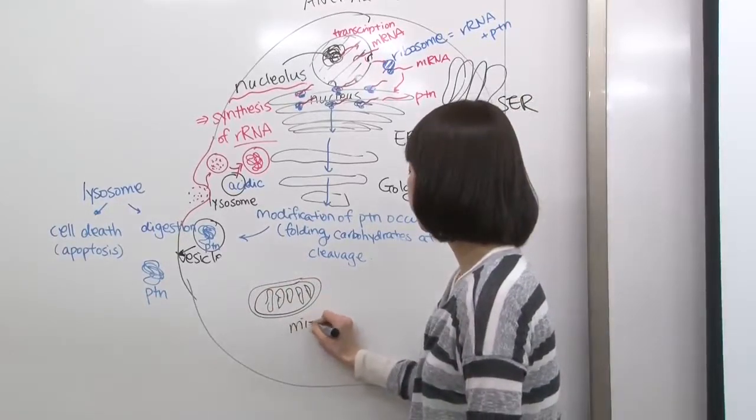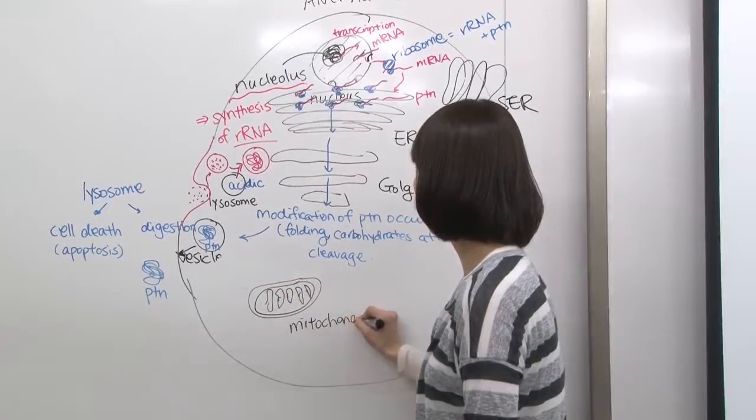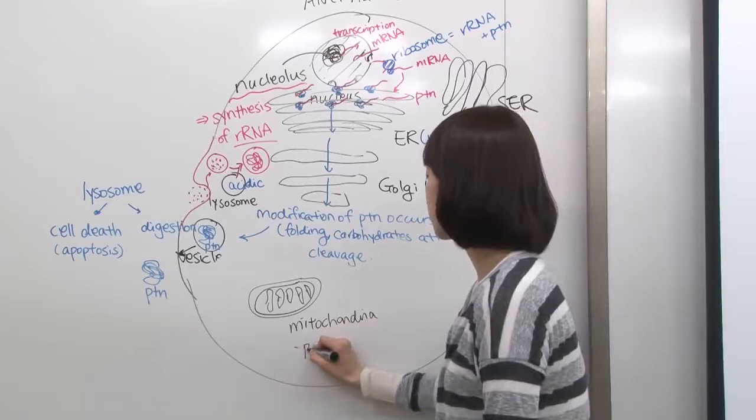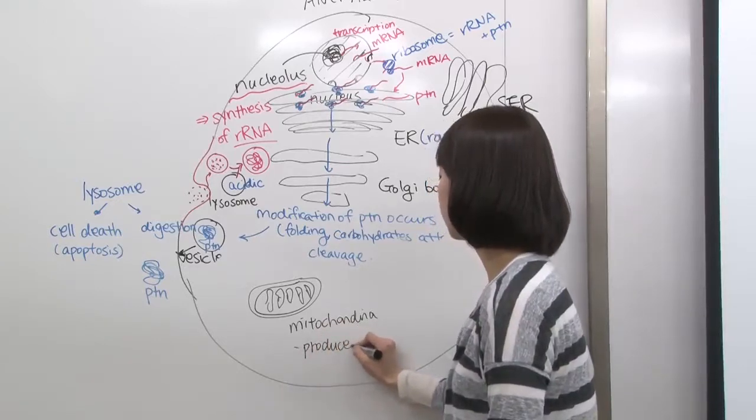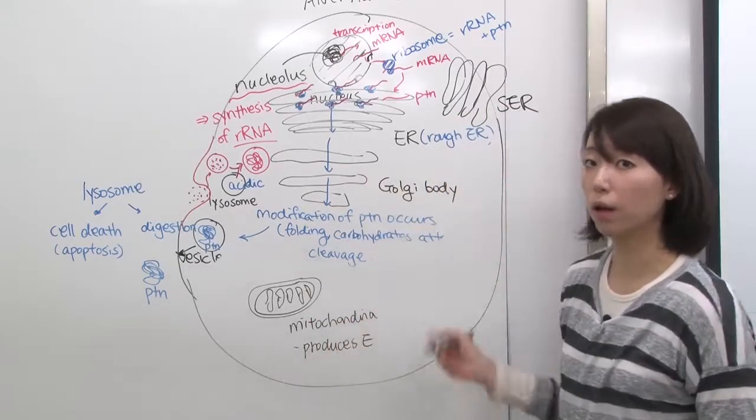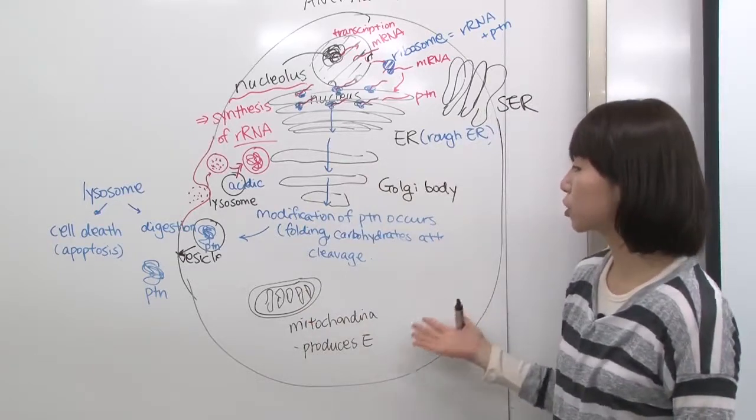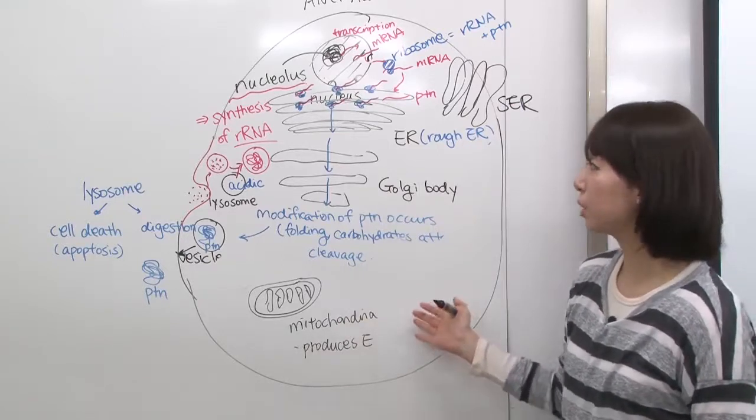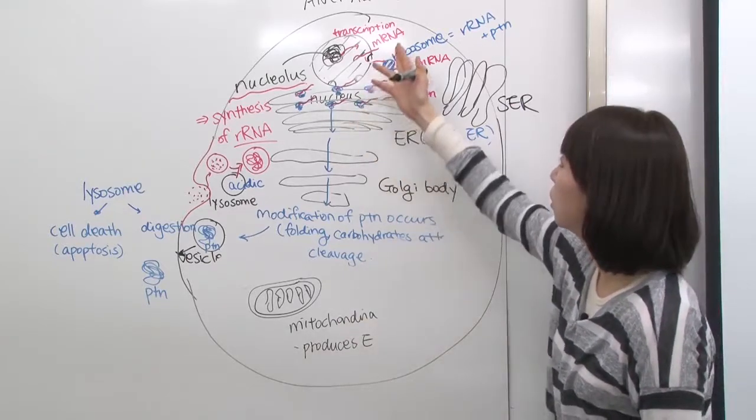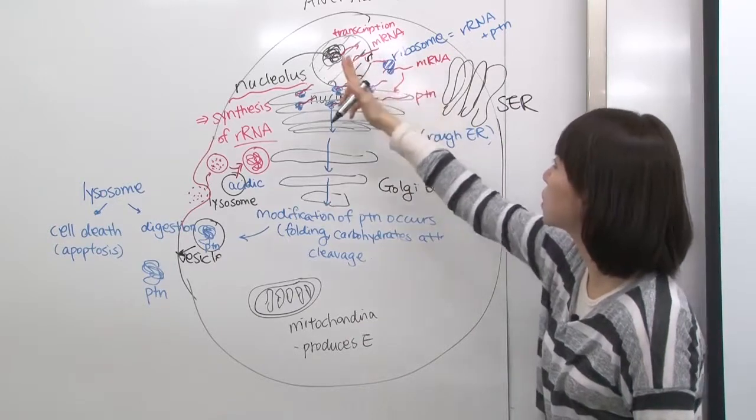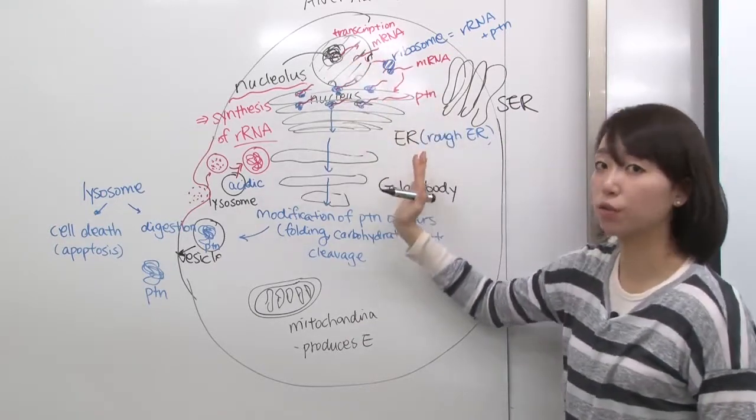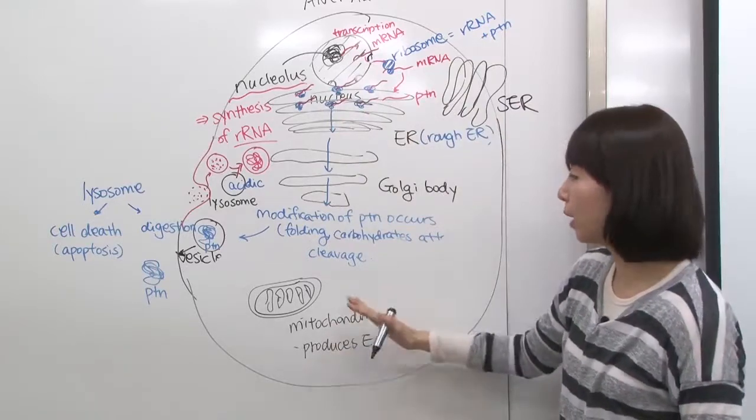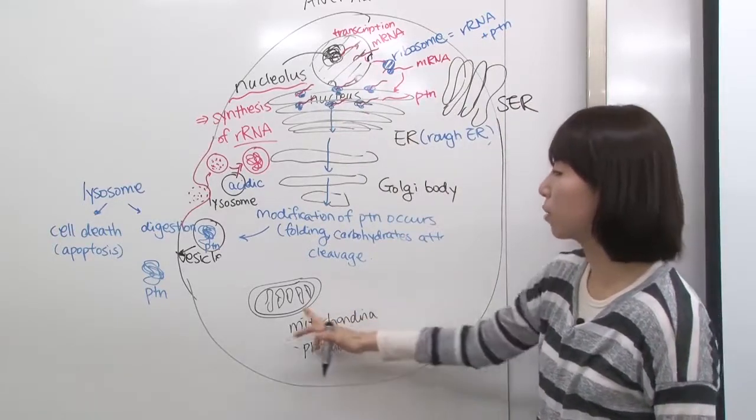What mitochondria does is produce ATP, the energy needed for the cell to function. The cell needs chemical energy for processes like RNA translation and DNA transcription. All those processes need energy, and that energy source comes from the mitochondria.